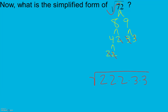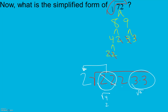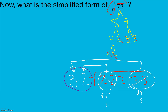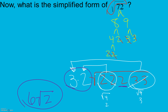Because 72 is inside a square root, so is my prime factorization. I have a pair of 2s that comes out as a 2 — that's the square root of 4, which is 2. My last 2 has no pair, but I do have a pair of 3s, which is like taking the square root of 9 — that comes out as a 3. So outside I have 3 times 2 = 6, and inside I have a 2. The square root of 72 is 6 times the square root of 2.